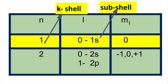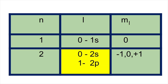For example, if n is equal to 1, the shell is called the K shell. Each shell has subshells based on the azimuthal quantum number. Subshells are denoted by small letters: s for l equal to 0, and p for l equal to 1.